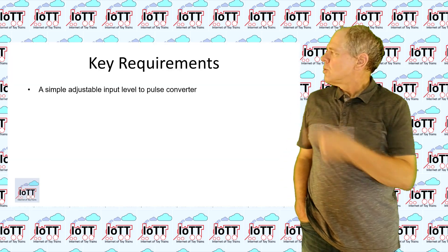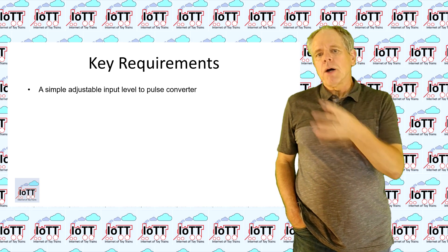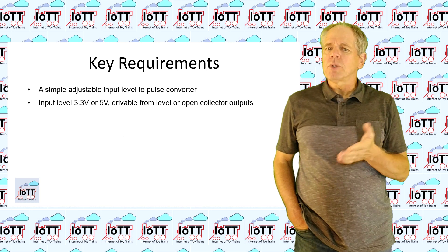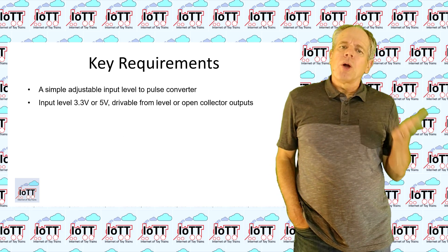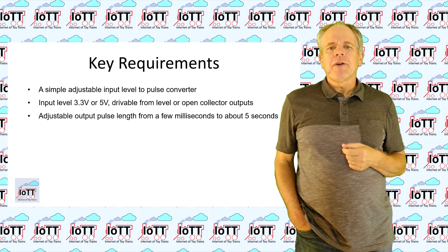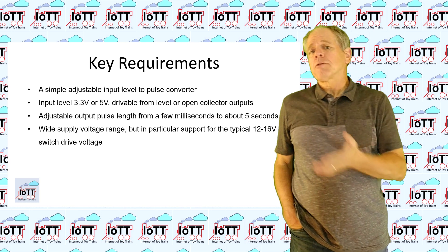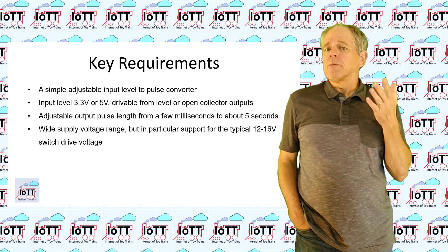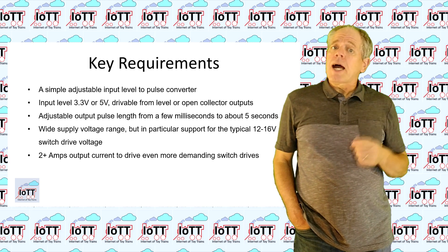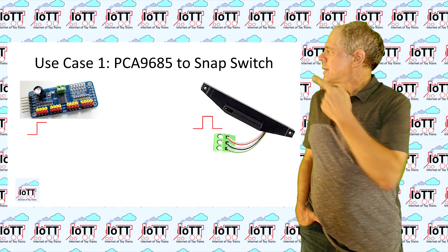So, these initial considerations led to this requirements list. A simple adjustable input level to pulse converter, with input level of 3.3 or 5V, drivable from level inputs like a switch or relay, or from an open collector output, for example from a current sensor, and of course from a PCA9685 output. An adjustable output pulse, from a few milliseconds to about 5 seconds. A wide supply voltage range, but in particular support for a typical 12-16V switch drive voltage. 2A output current to drive even more demanding switch drives.